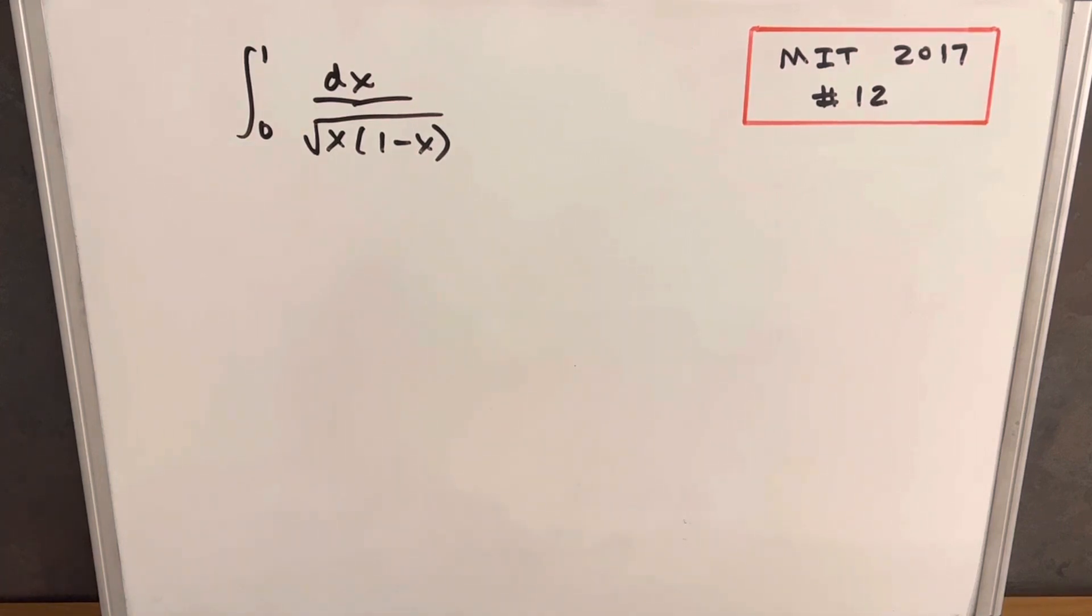We have here another integral from the MIT Integration Bee 2017, problem number 12. The integral is from 1 to 0, dx over the square root of x times 1 minus x.